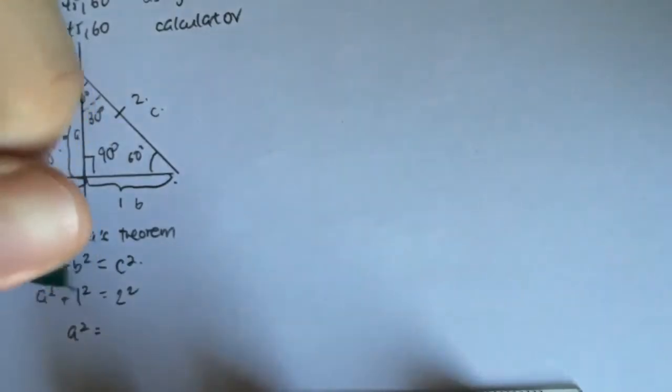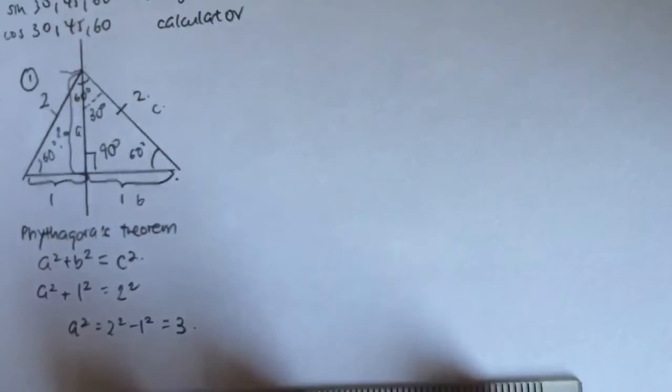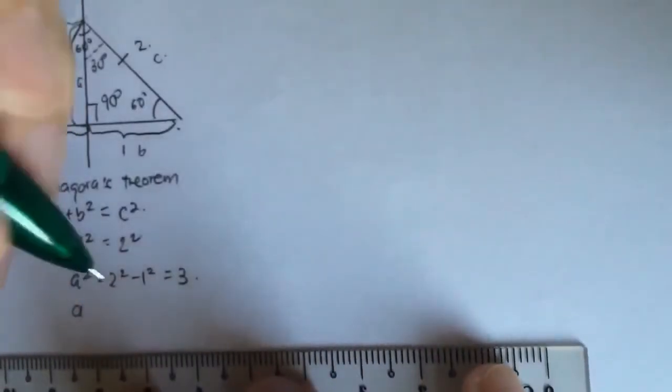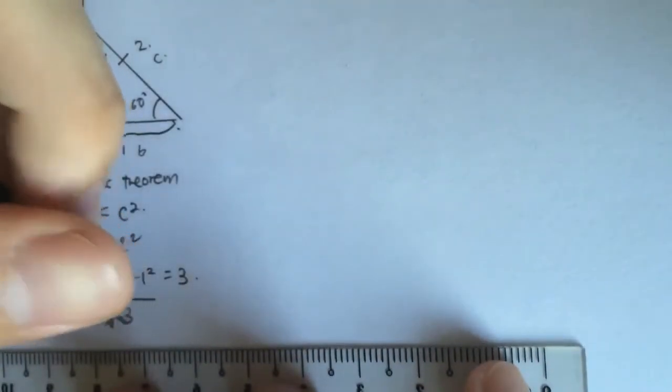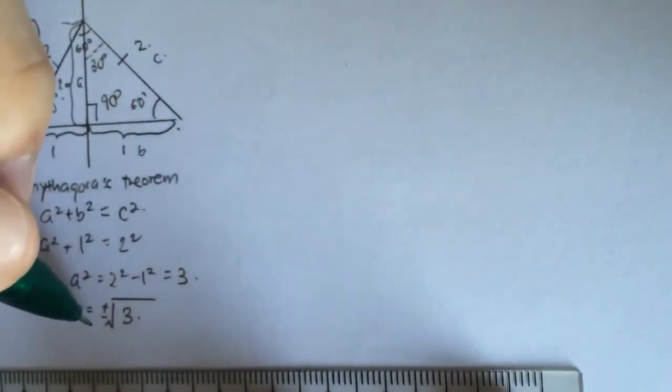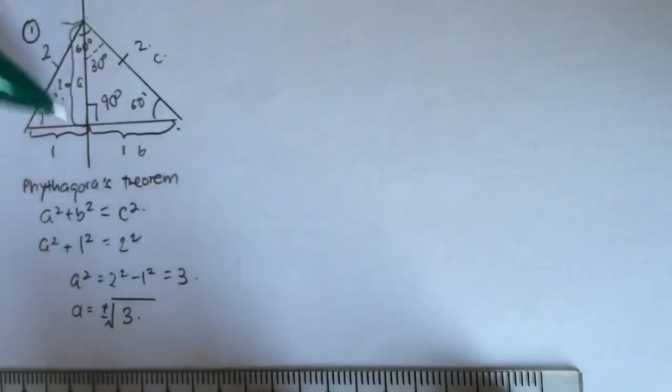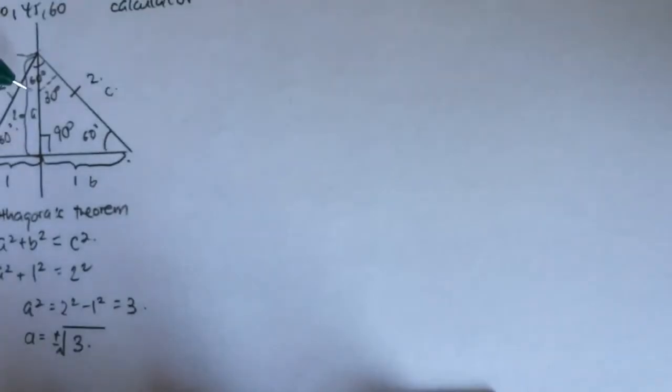In this case, c equals 2 and b equals 1. So a squared equals 2 squared minus 1 squared, which equals 3. Therefore, a equals the square root of 3. We take only the positive value because length can only be positive. So this unknown length is square root 3.